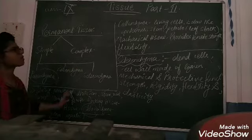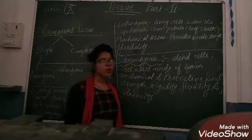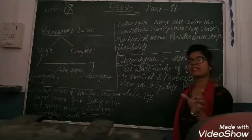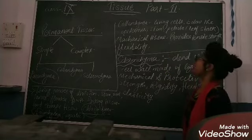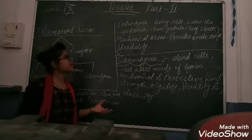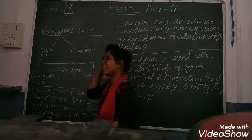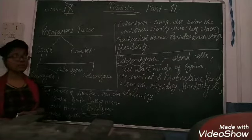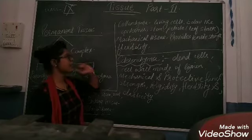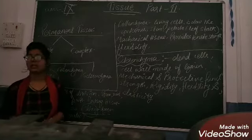Let's move to collenchyma. Collenchyma cells are living cells and their presence is below the epidermis in the stem and petiole. The main function of collenchyma is to provide mechanical support to the plant. Flexibility and tensile strength are also important — as we have already read in physics about tensile strength. The most important function is to provide mechanical support, flexibility, and tensile strength.